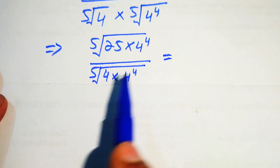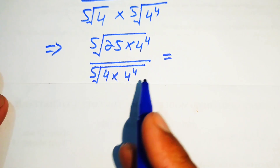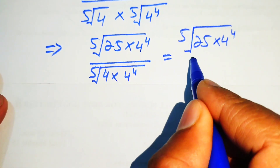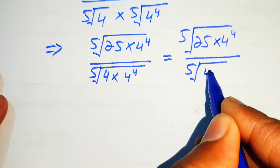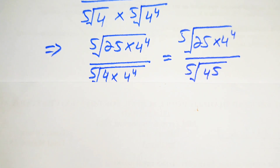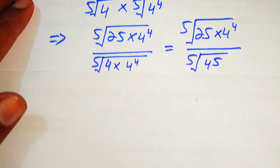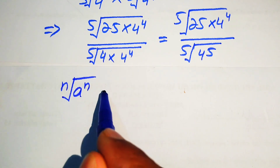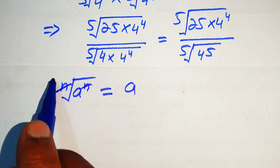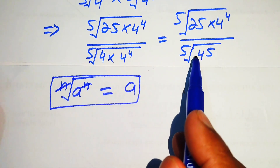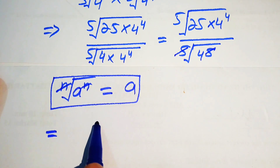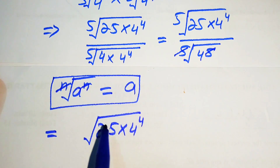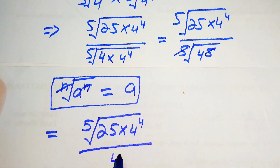In the denominator, the two bases are the same, so we add their exponents. It becomes the 5th root of (25 times 4 to the power of 4), divided by the 5th root of 4 to the power of 5. We then apply the radical law: nth root of a to the power of n cancels to give a. So the 5 cancels, and the denominator becomes 4. The remaining expression is the 5th root of (25 times 4 to the power of 4), divided by 4.